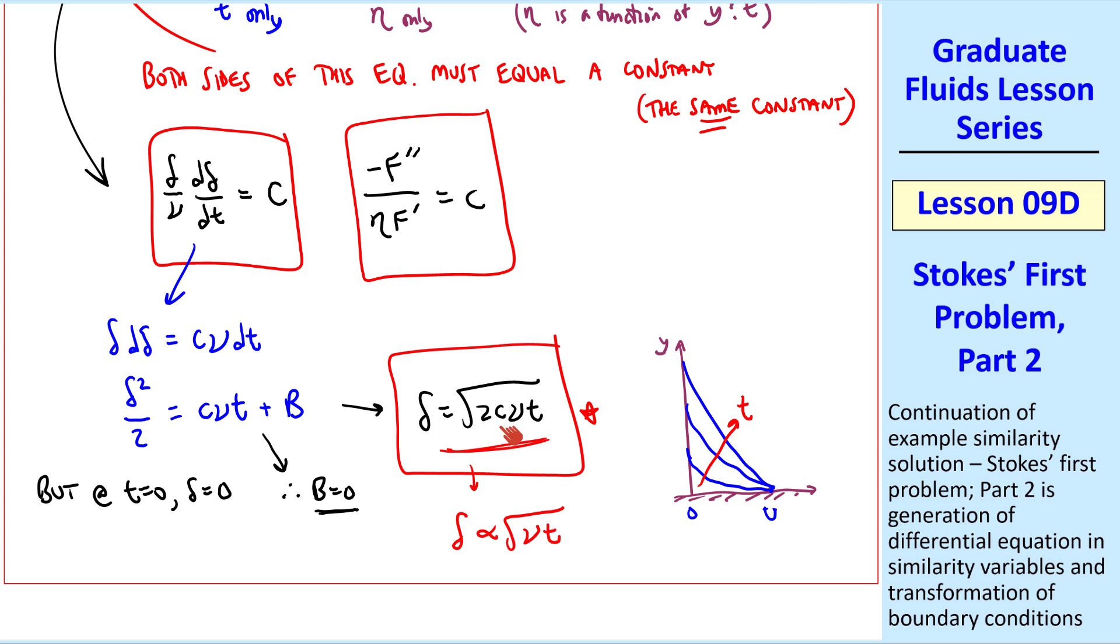In other words, delta is proportional to the square root of νt. But what is constant c? Well, it's somewhat arbitrary, but it will depend on how we choose to define our delta.